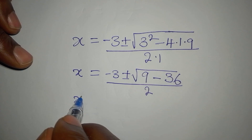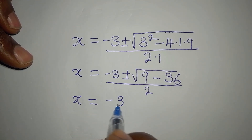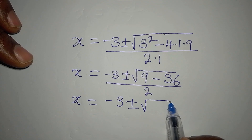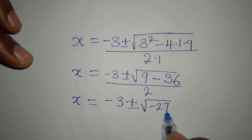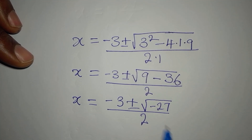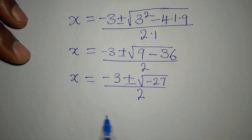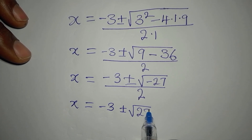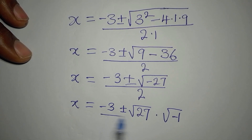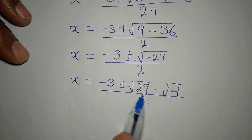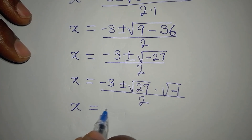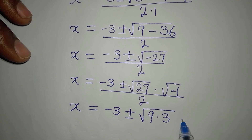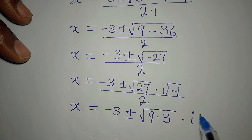So x equals minus 3 plus or minus the square root of negative 27, divided by 2. We factor out the negative: square root of 27 times square root of negative 1. Since 27 equals 9 times 3, the square root of 9 is 3, leaving root 3. And square root of negative 1 is i. So we have 3 times root 3 times i, all divided by 2.